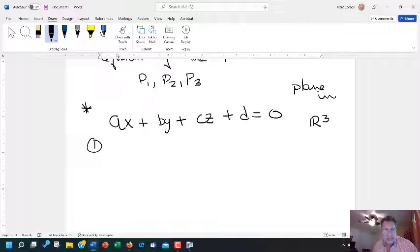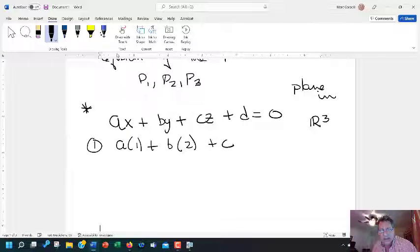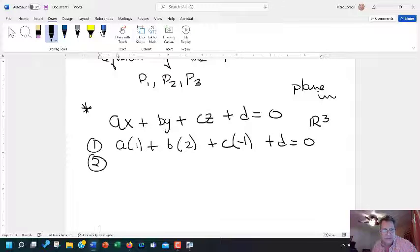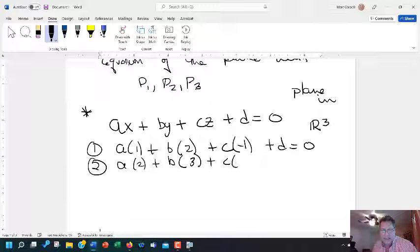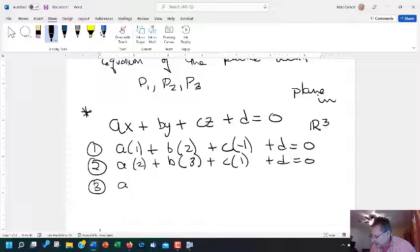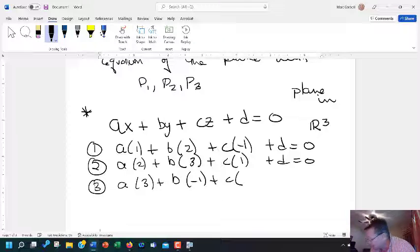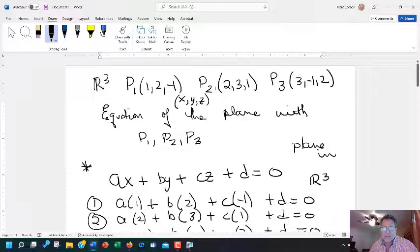That plane is going to have the equation Ax plus By plus Cz plus D equals 0. That's going to be the equation of a plane in R3. Notice this is a linear equation: X is power 1, Y is power 1, Z is power 1. And notice we have a D here as well. What we're going to realize is that each of these points represents X, Y, Z, and we're going to come up with three equations of the plane.